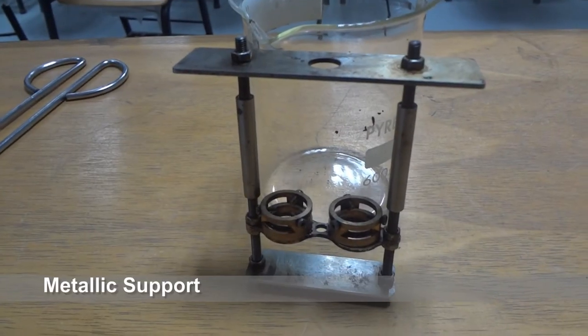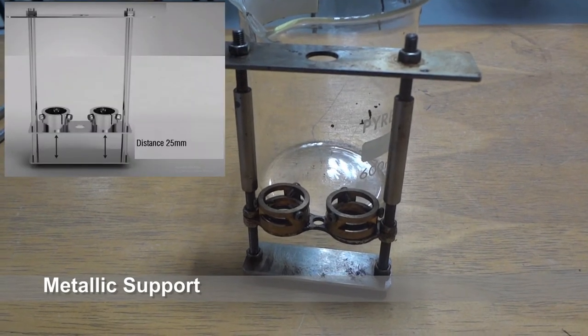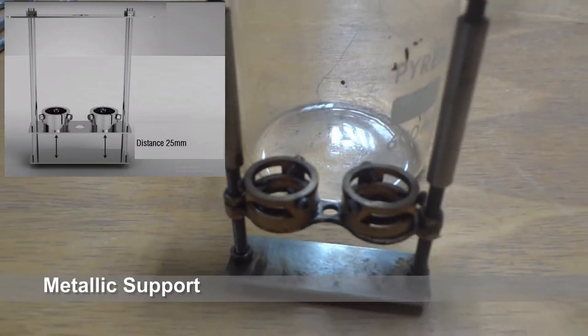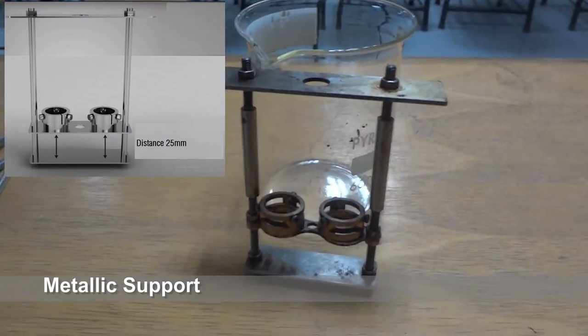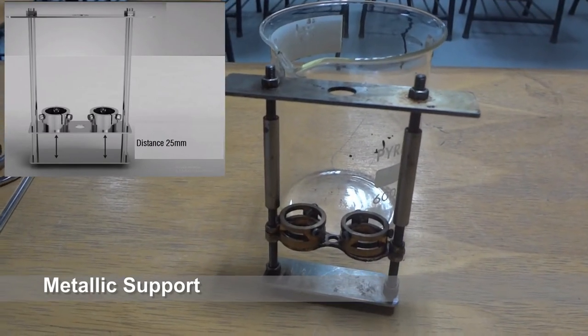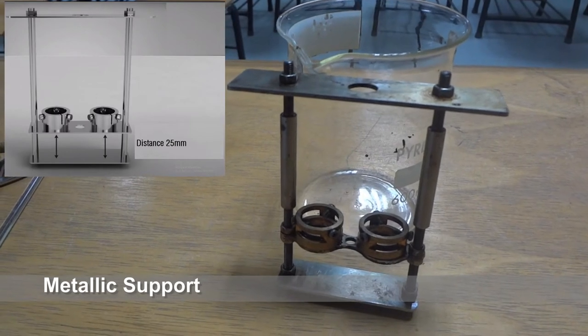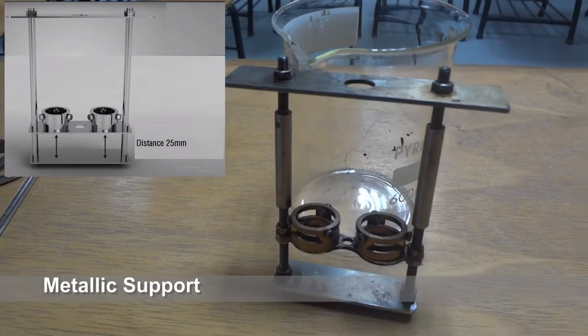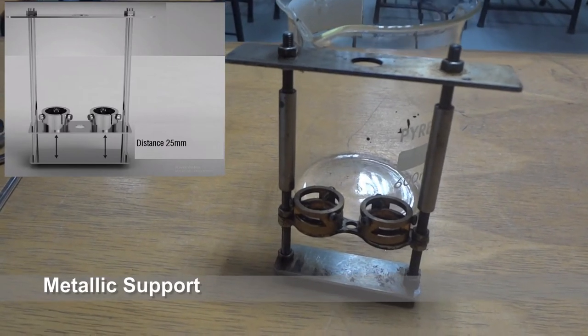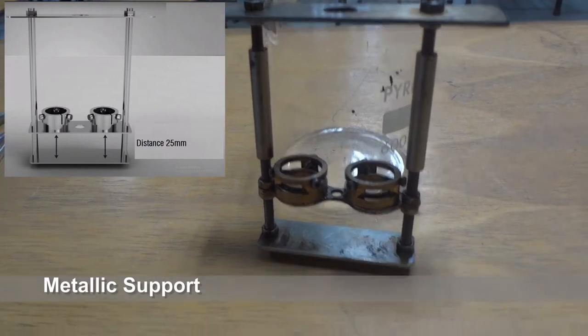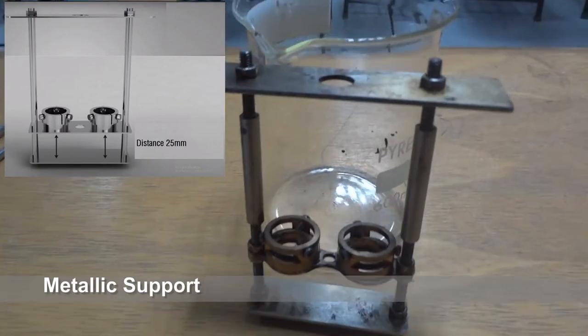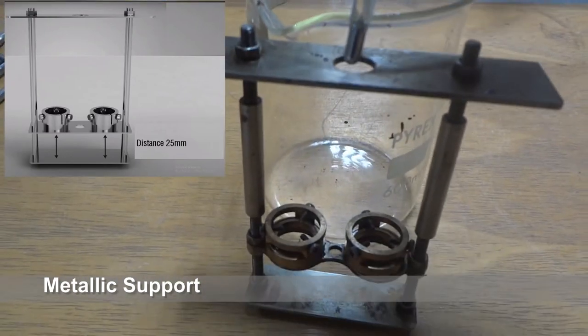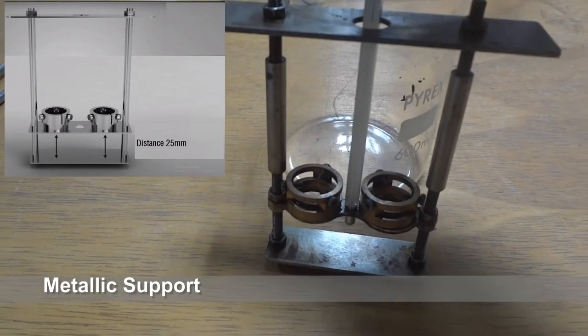A metallic support is used for placing the pairs of rings at a distance 25 mm between the bottom of the rings and the top surface. The base plate of the bottom plate of the support is provided with provision to measure the process temperature. Here is the place to place the thermometer.